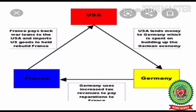According to the Dawes Plan, the USA lent money to Germany which Germany spent on building up its economy, while the Weimar Republic increased taxes to generate revenue to pay war reparations to France. France then used the money received from Germany to pay back its loan to America from the First World War and to import US goods to strengthen the French economy. The Dawes Plan was thus a wise plan devised by Charles Dawes that helped Germany come out of economic crisis while also benefiting America in recovering its loans from France.